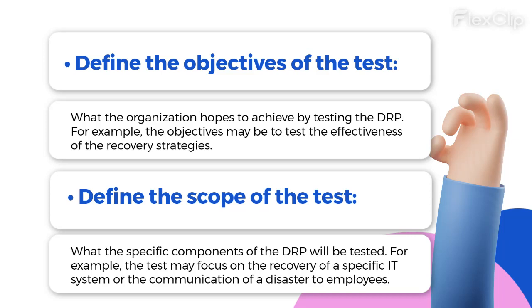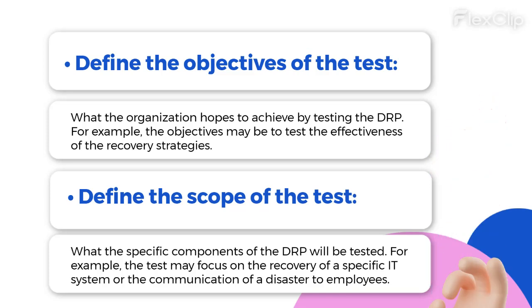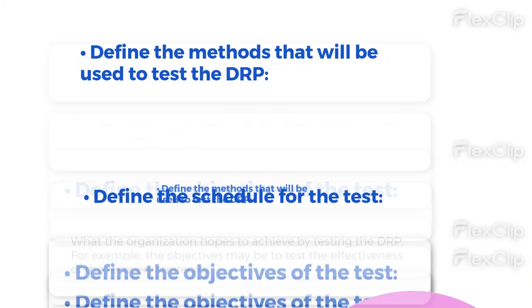Define the scope of the test — what the specific components of the DRP will be tested. For example, the test may focus on the recovery of a specific IT system or the communication of a disaster to employees.